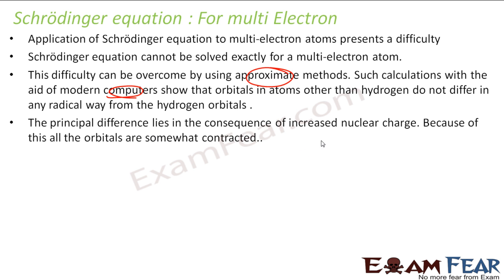And the main difference is the increase of nuclear charge because of which the orbital gets contracted. And this is a little complex equation, Schrödinger equation.